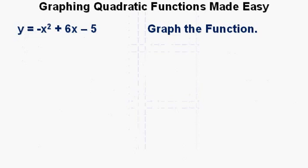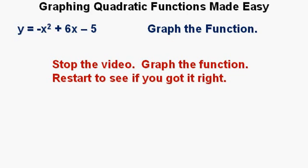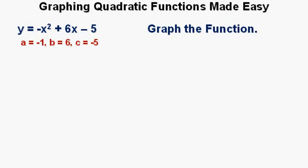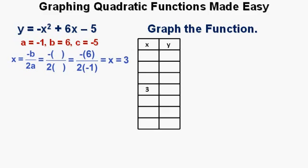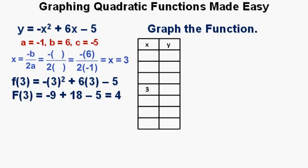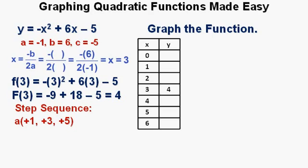Now we'll graph the last function in this lesson: y equals negative x squared plus 6x minus 5. I invite the viewer to pause the video and graph this function, then restart to see if you got it right. A is negative 1, B is 6, and C is negative 5. Working out the axis of symmetry, that equation is x equals 3. With 3 as the center input value, plugging 3 into the original equation gives an output value of 4, so the vertex is (3, 4). The step sequence is negative 1 times plus 1, plus 3, plus 5, giving us negative 1, negative 3, and negative 5.